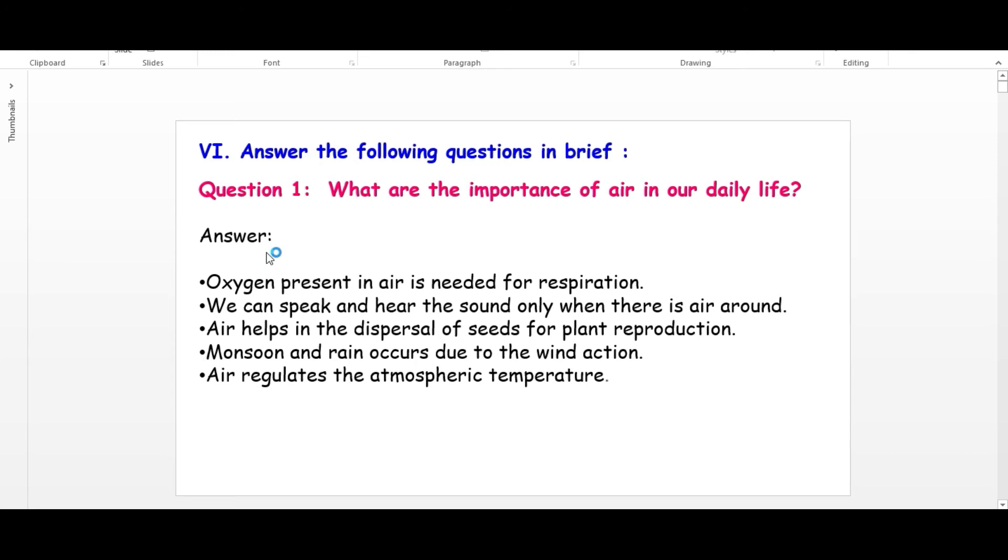Answer: Oxygen present in air is needed for respiration. We can speak and hear sounds only when there is air around. Air helps in the dispersal of seeds for plant reproduction. Monsoon and rain occurs due to wind action. Air regulates the atmospheric temperature. So this is important for our daily life.